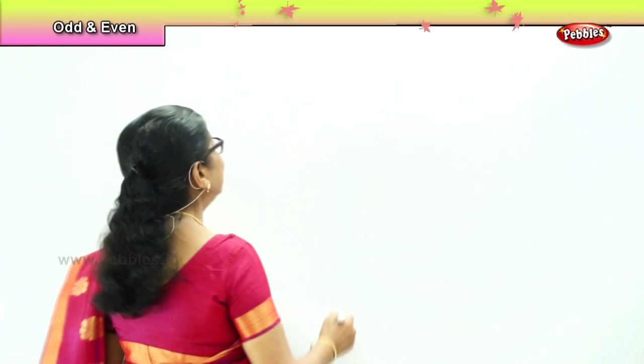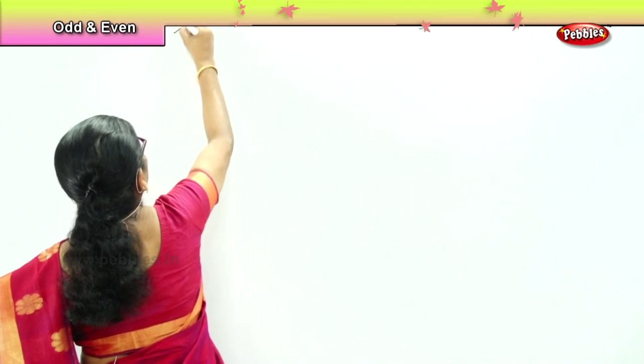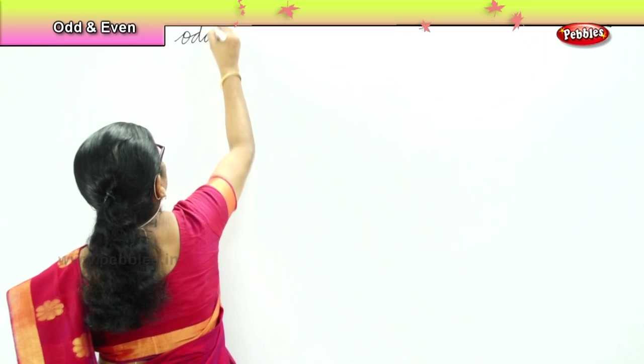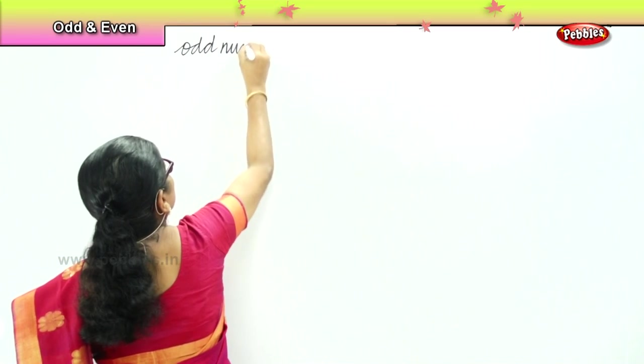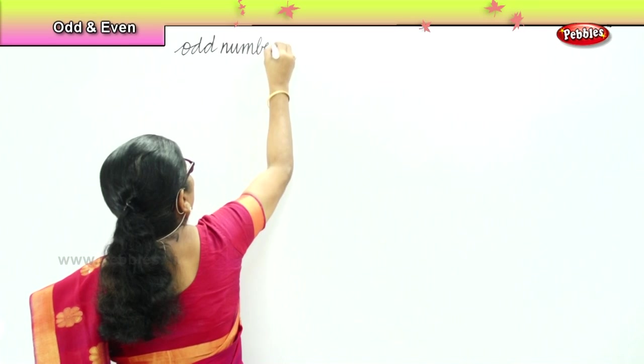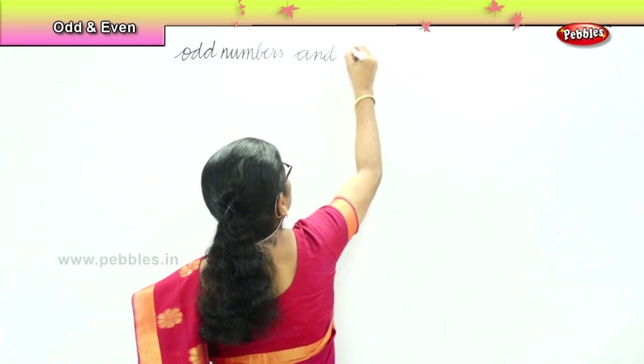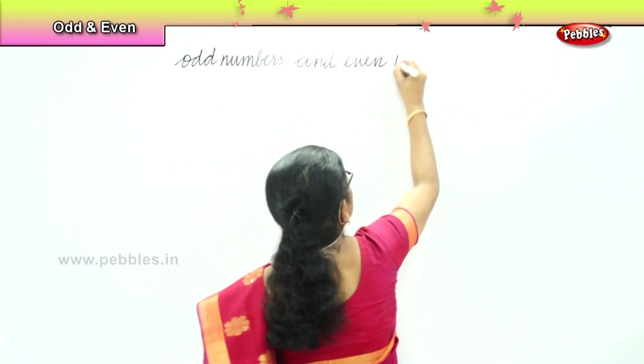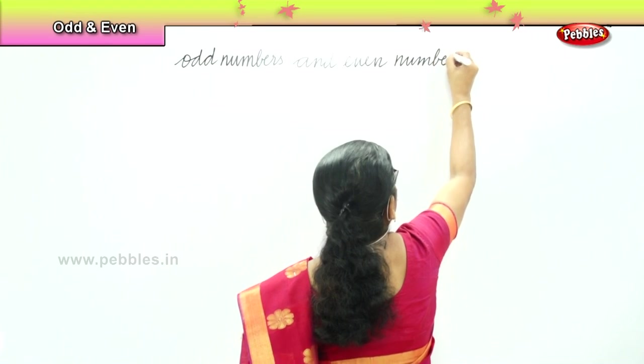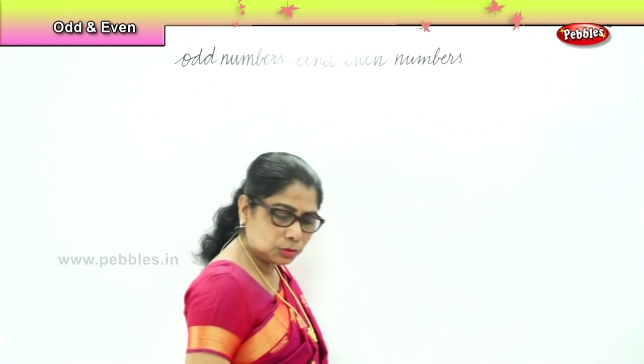Now, in numbers, today we are going to understand what is odd — what is left out — and what is even, what is the meaning. That's what we are going to try and understand: odd numbers and even numbers.